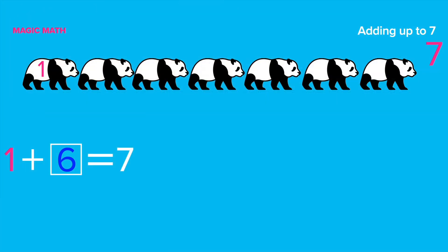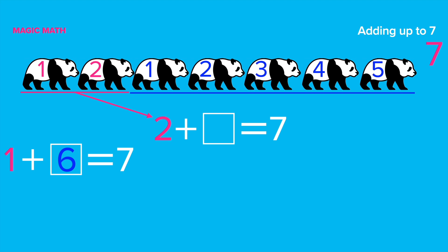Now, let's work on the second puzzle. 2 plus what equals 7? Let's repeat what we did for the first puzzle and draw it out. Good job. Let's underline the first two pandas and connect them to number 2. How many pandas are not counted? Let's count. 1, 2, 3, 4, and 5. Right! 5 pandas. So, 2 plus 5 equals 7. Good job.